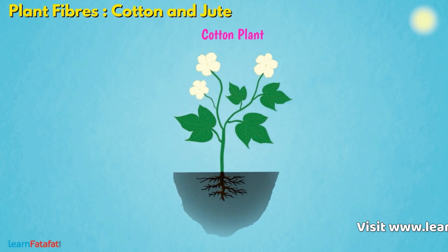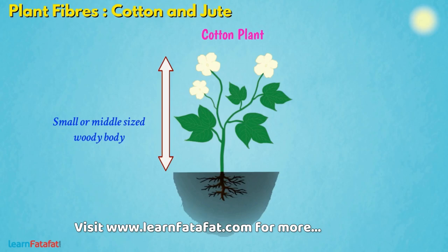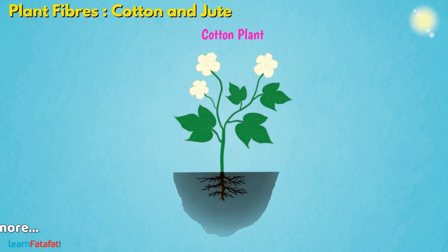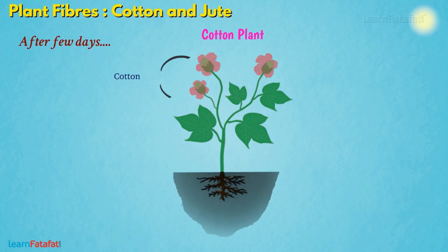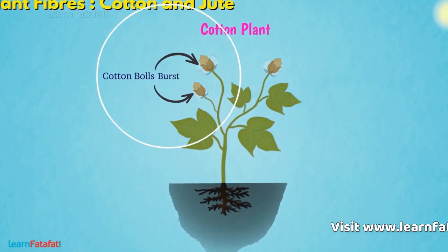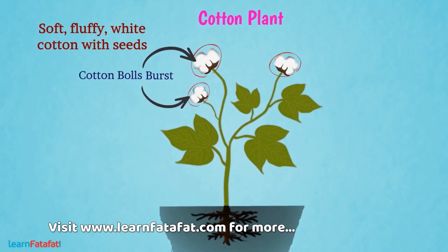A cotton plant is a small or middle-sized woody body, categorized as a shrub or bush. During flowering, cotton plants produce flowers of yellowish-white color. After a few days, these flowers turn pink-red. Slowly, flowers change into green cotton balls. A grown cotton ball is similar in size to a lemon. After maturity, these balls burst open and we see soft fluffy white cotton with seeds covered in it.